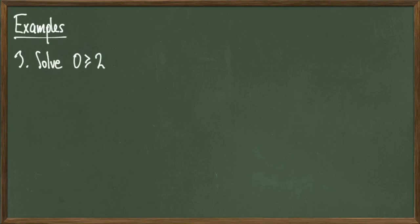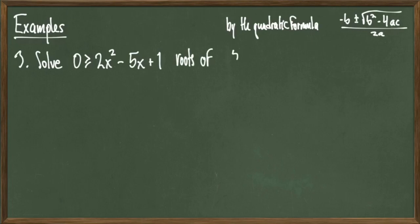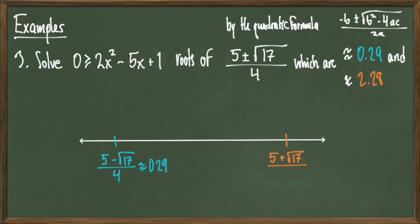Let's look at one more example where we don't factor. Solve 0 ≥ 2x² - 5x + 1. Using the quadratic formula — (-b ± √(b² - 4ac)) / 2a — and plugging in this polynomial, I get roots of (5 ± √17) / 4, which simplify to approximately 0.29 and 2.28. I'll place these roots on the number line. Definitely use a calculator for these kinds of problems.